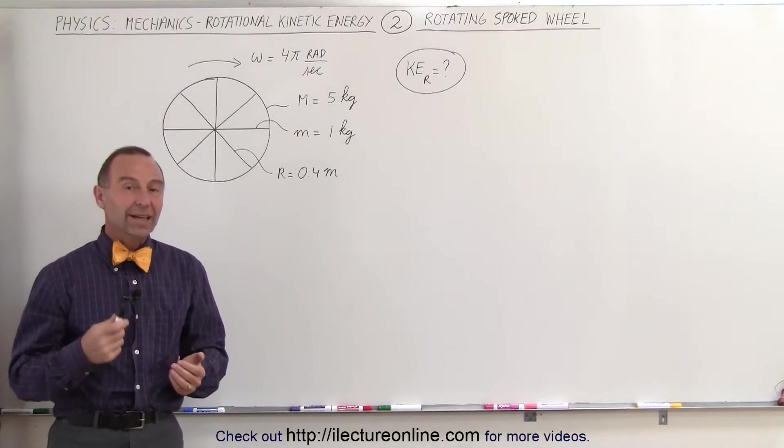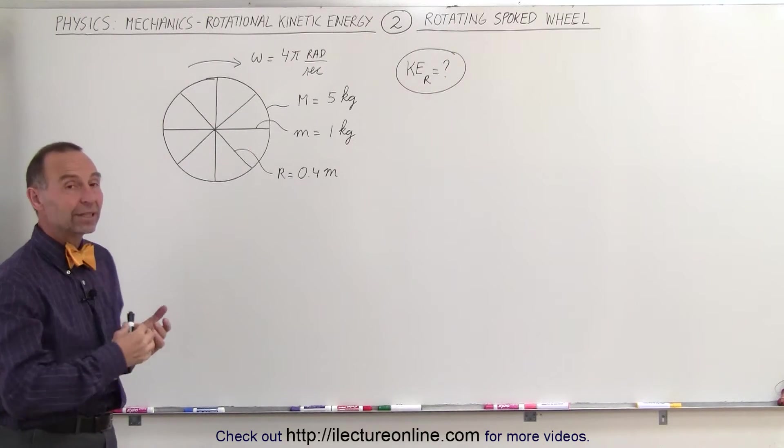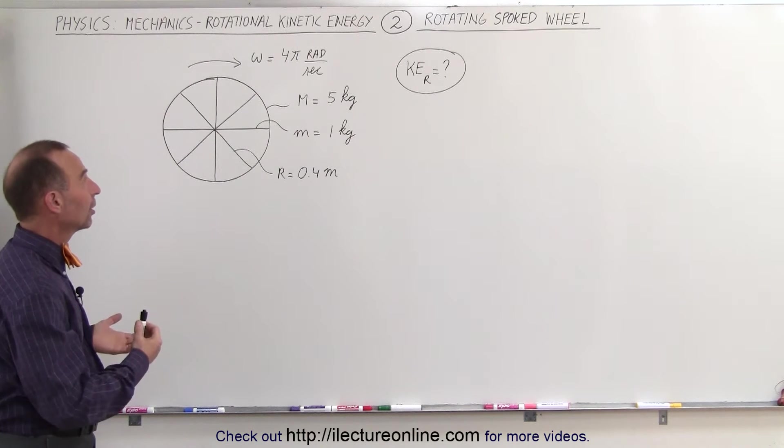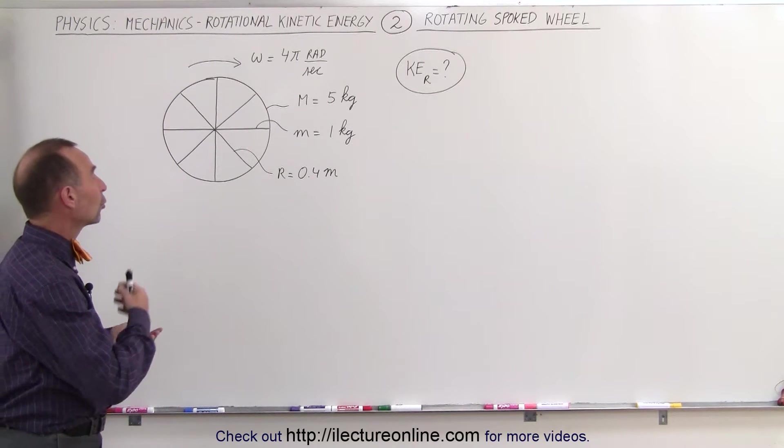Welcome to Electron Line. For our second example of how to find the rotational kinetic energy of a rotating object, we're going to take this spoked wheel.